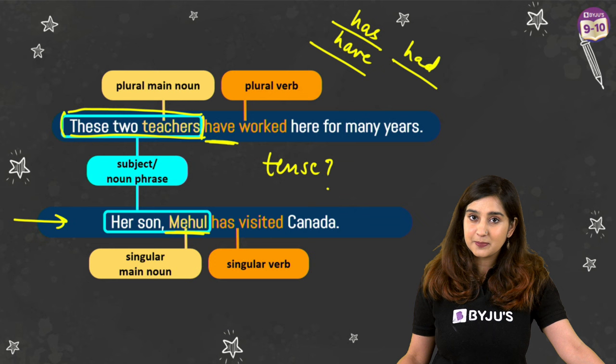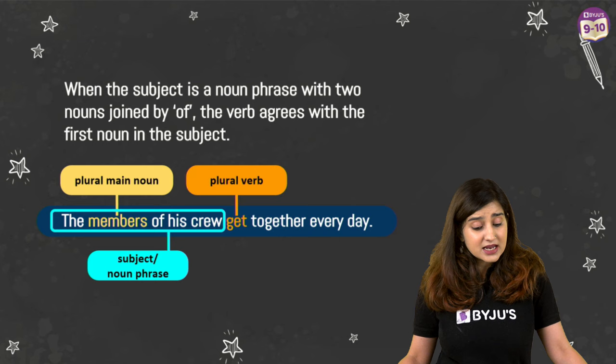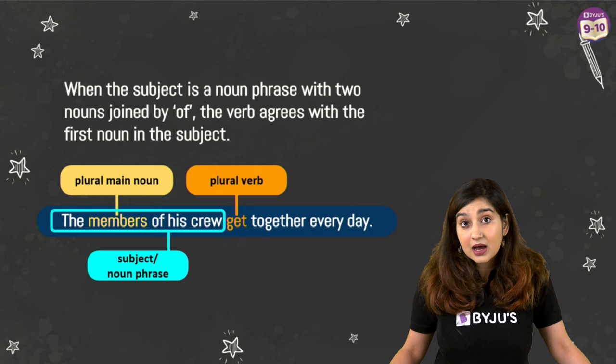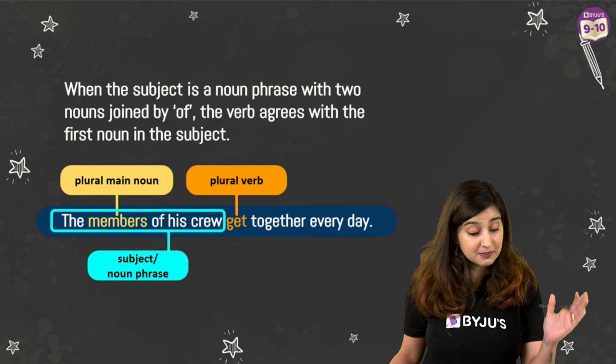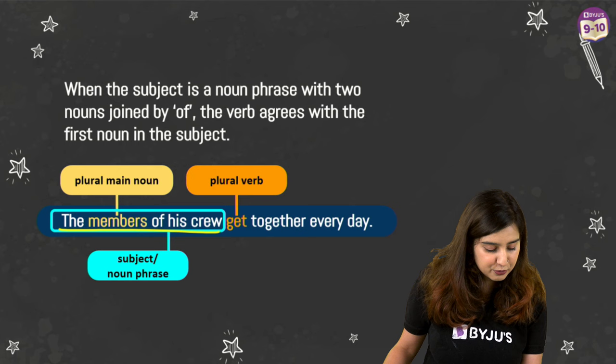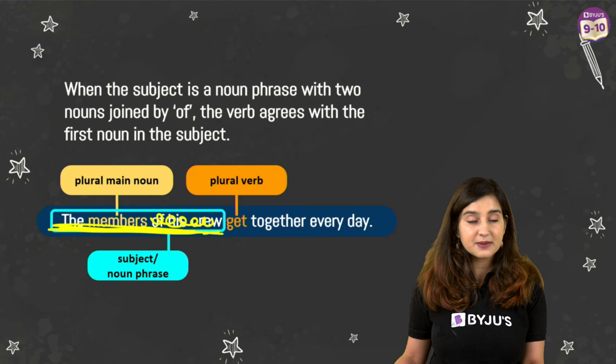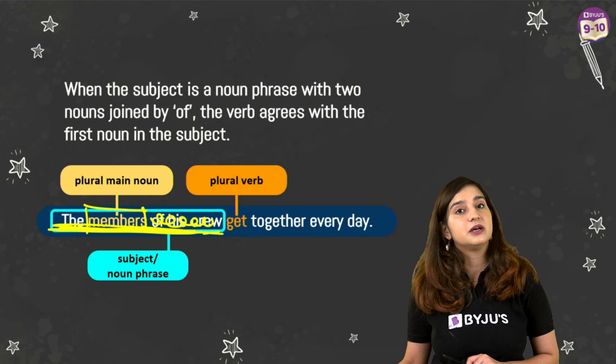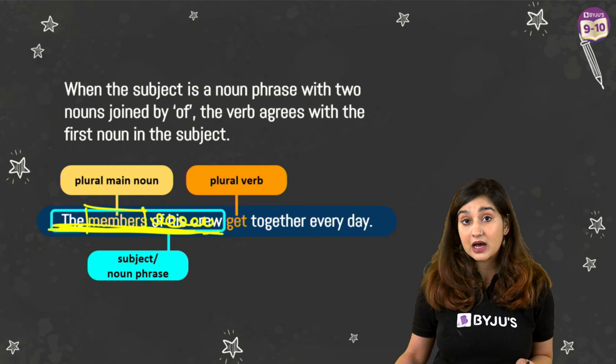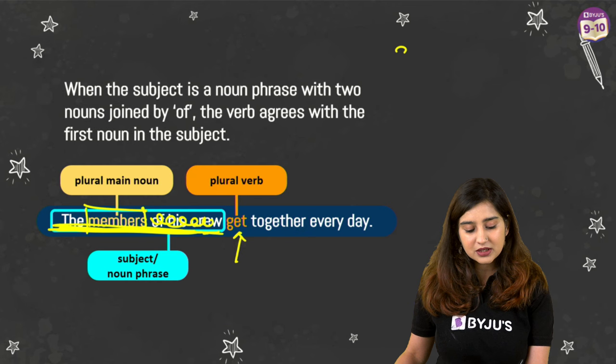When the subject is a noun phrase with two nouns joined by 'of,' the verb agrees with the first noun in the subject. For example: 'The members of his crew get together every day.' The full subject noun phrase is 'the members of his crew.' We ignore everything after 'of' and look at what comes before it — 'members' — which is plural. So we use the plural verb 'get.' If it were singular, it would be 'gets.'